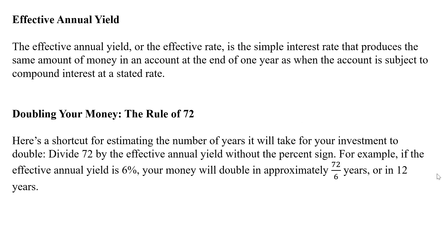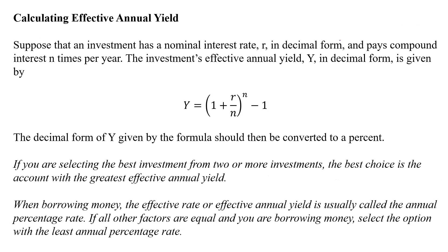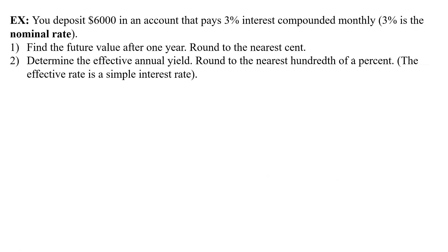But we're not going to do that. We're going to actually calculate future value and effective annual yields. We deposit $6,000 in an account that pays 3% interest compounded monthly. 3% is the nominal rate. Monthly means N equals 12. For the first problem, we have A equals we're investing $6,000 times 1 plus 0.03, which is our interest rate, divided by 12, which is how often we're compounding it, raised to 12 times 1. We want it after one year, so it's just 1 here.